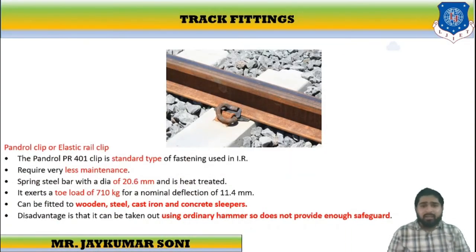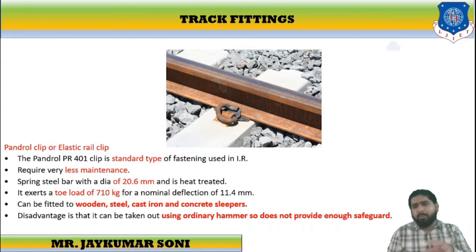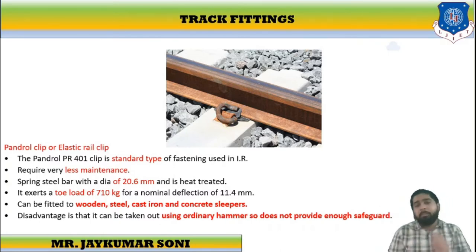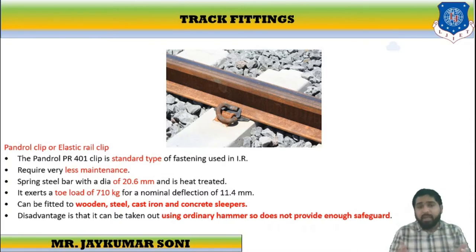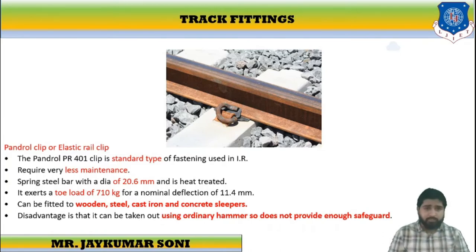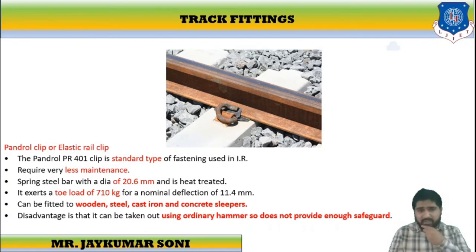Regarding track fittings, the first item is the pan drawer clip, also known as the elastic rail clip. It is the standard type of fastening used in iron. It requires less maintenance. The spring steel bar has a diameter of 20.6 mm and is heat treated. It exerts a toe load of 7–10 kg with a normal allowable deflection of 11.4 mm. It can be fitted to wooden, cast iron, and steel sleepers. One disadvantage is that it can be removed using an ordinary hammer, so it does not provide sufficient safeguards.